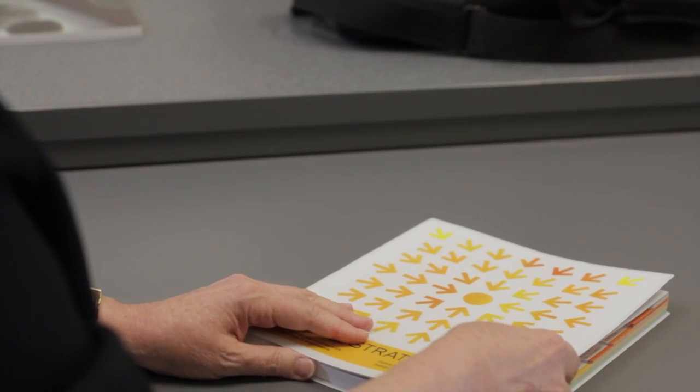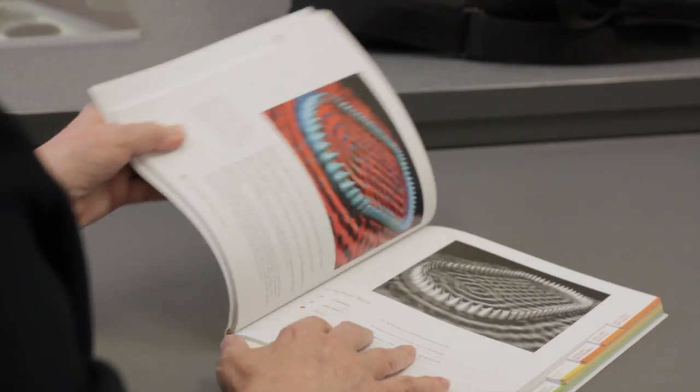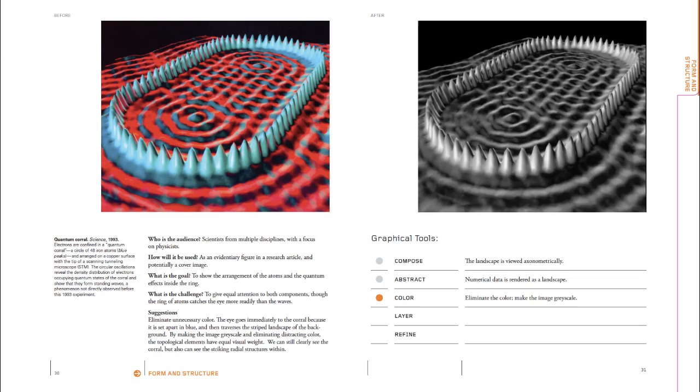For example, the spread we have in the chapter on form and structure - what we did was have what we're calling befores and afters.